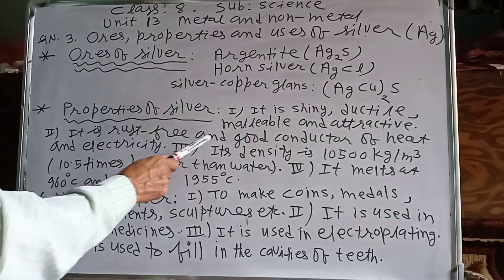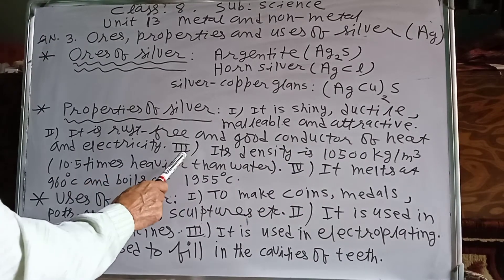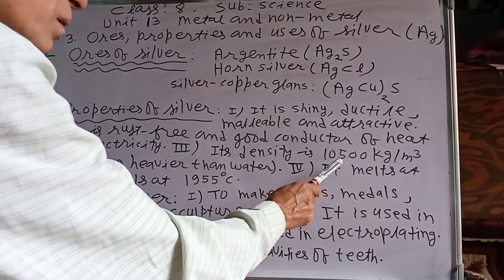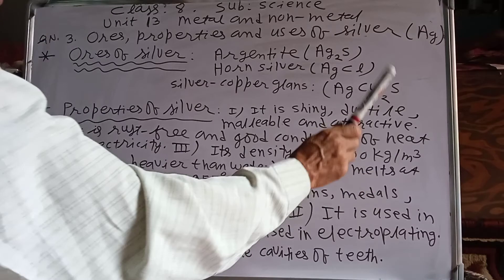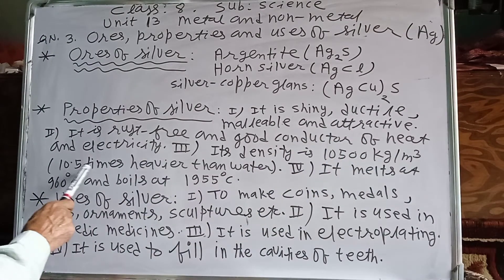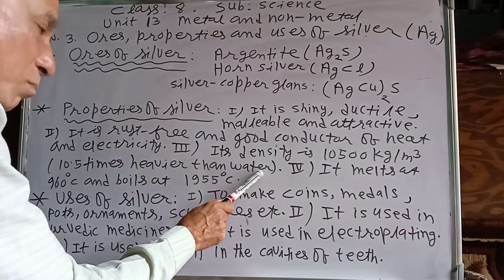It is rust-free and good conductor of heat and electricity. Number 3, its density is 10,500 kg per cubic meter. It means it is 10.5 times heavier than water of the same volume.